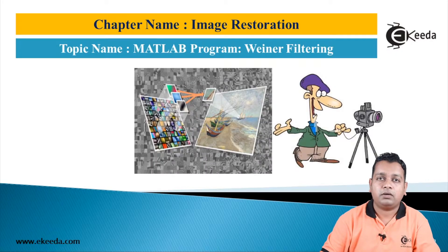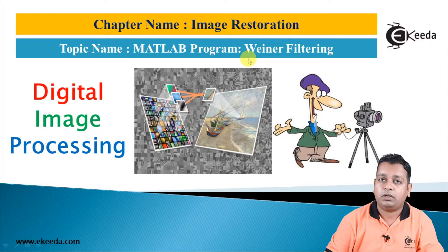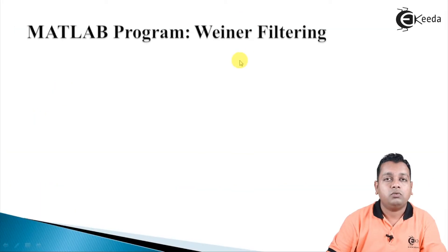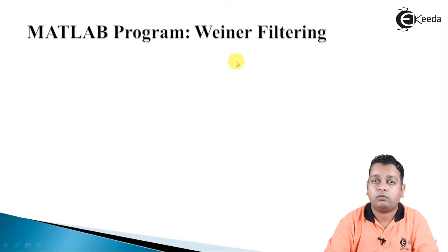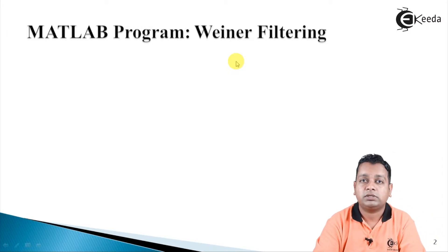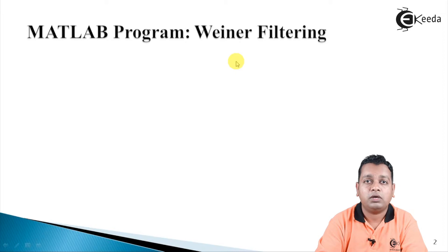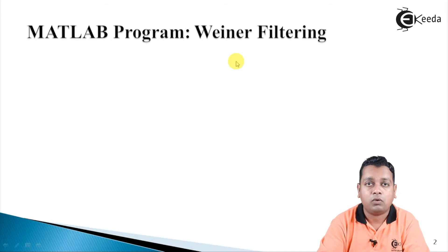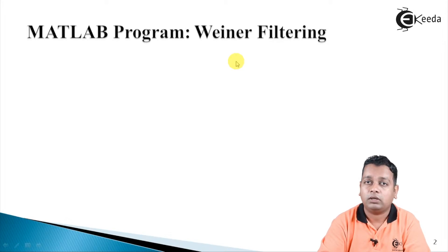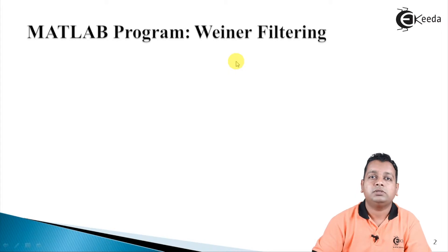The topic is: MATLAB program for the purpose of Wiener filtering in image restoration. The programming task shall be the same as we opted for inverse and pseudo inverse filtering — first reading the image, then degrading the image by adding noise, either Gaussian type or additive white Gaussian noise (AWGN). Then we shall apply Wiener filtering and observe the results of the input and output images at various stages. Let us switch to the MATLAB environment.